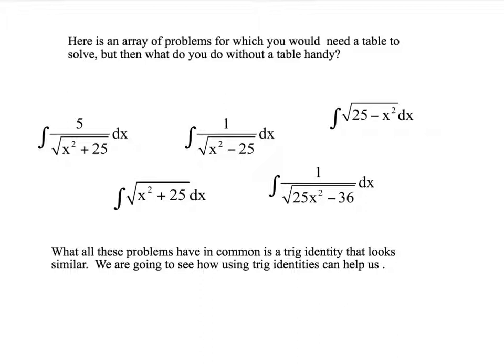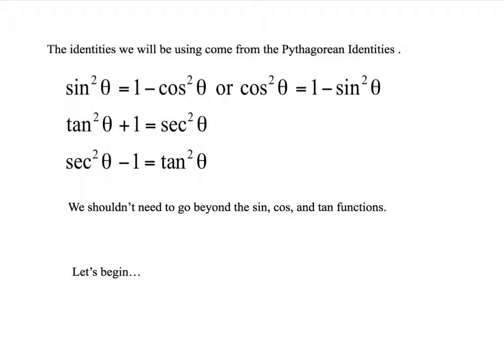This is a video on trig substitution. While these problems are in terms of x, without the aid of trig substitution or a table, you would not be able to figure out these problems. I'm going to show you how using trig identities. There are only about four identities you really need to know: sine squared plus cosine squared equals one, solved for both sine squared and cosine squared; and tangent squared plus one is secant squared, and secant squared minus one is tangent squared.